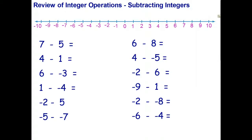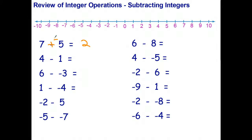Let's move on to subtracting. The way I've taught subtracting is: you never have to do a subtraction question — you can always turn every subtraction into an addition. First, seven minus five the normal way: seven take five is two. Now if I want to turn that into an addition question, I change subtract to add but then I have to change the sign to the opposite. So subtracting five is the same as adding negative five.